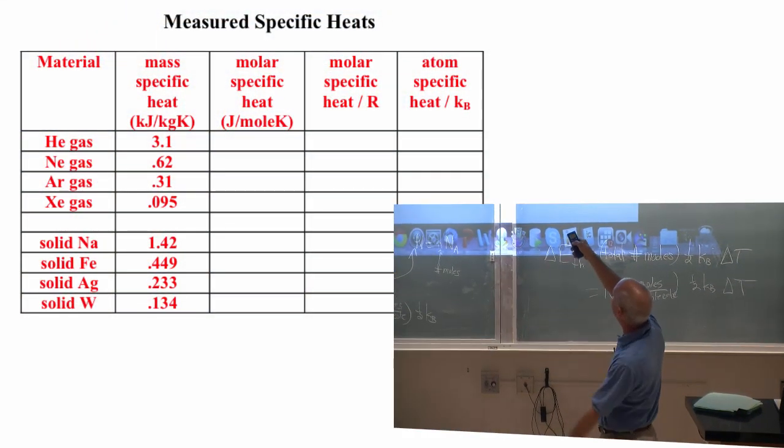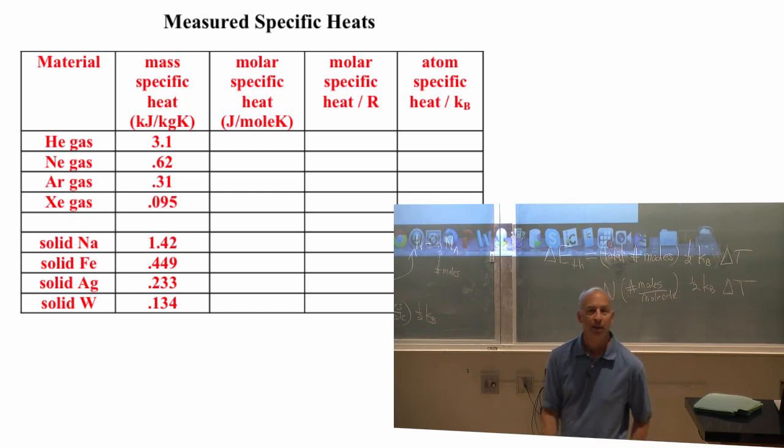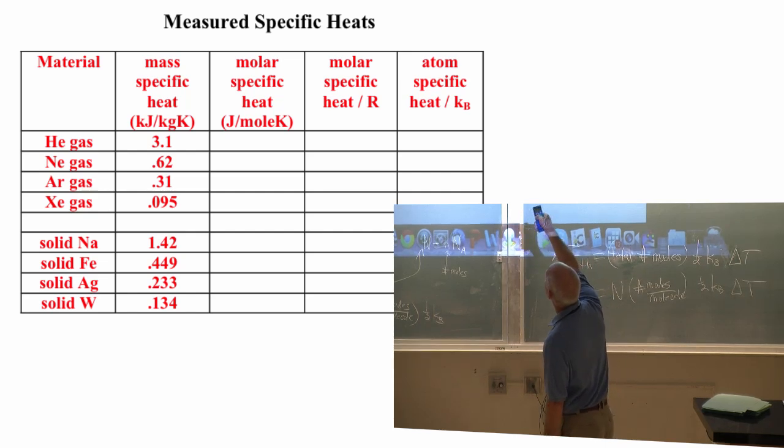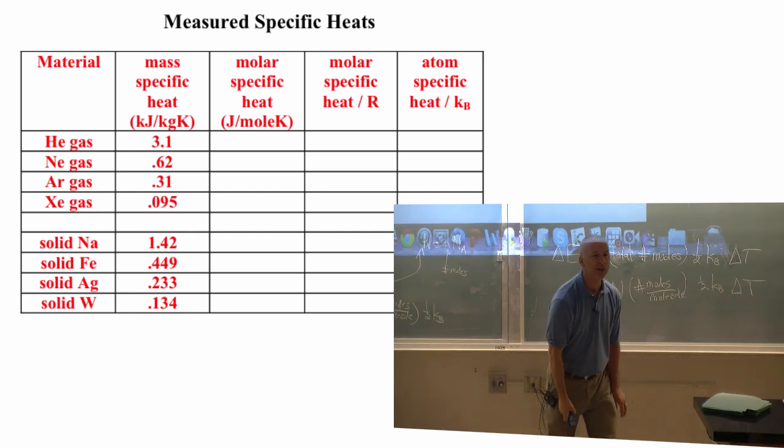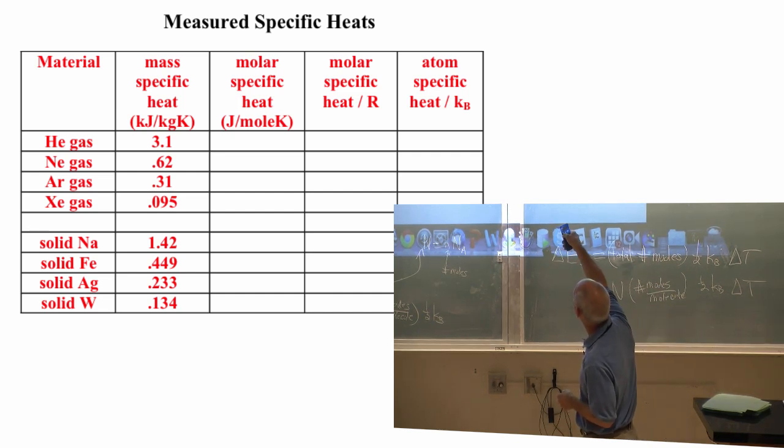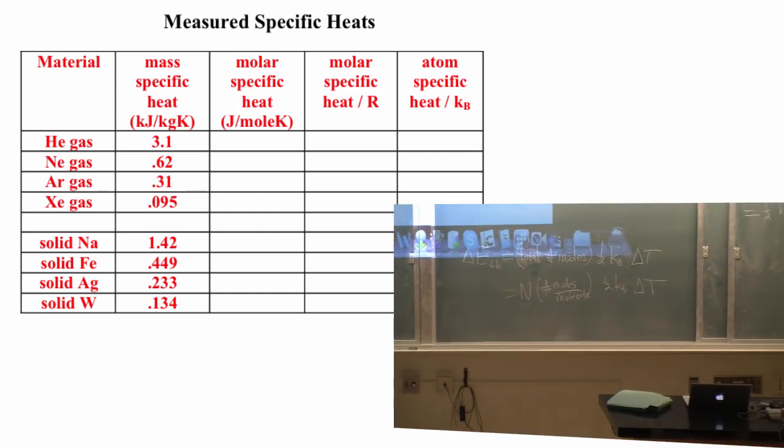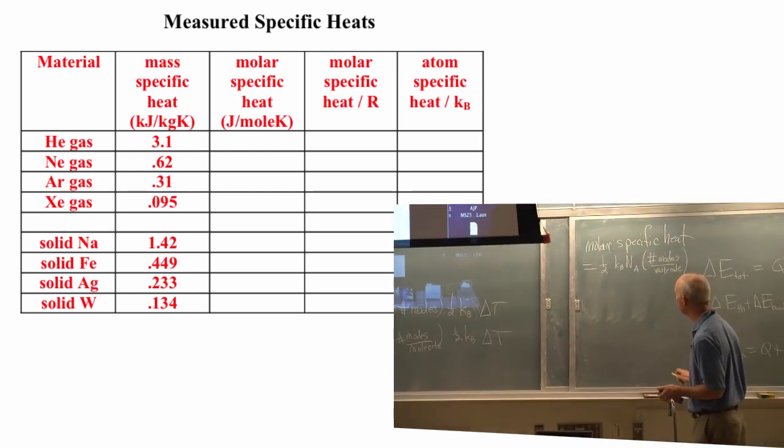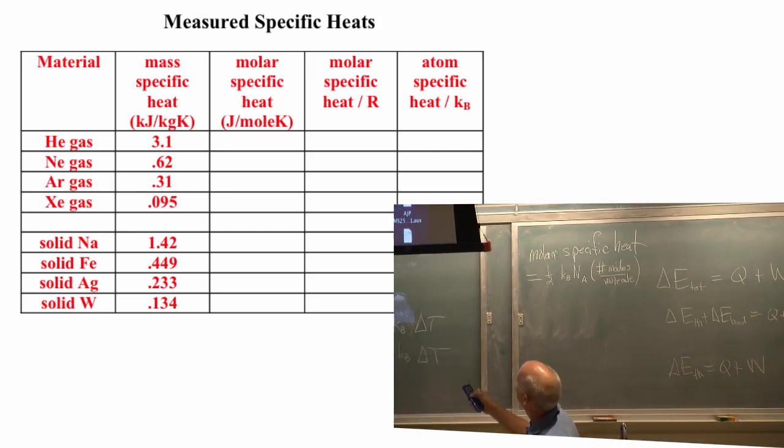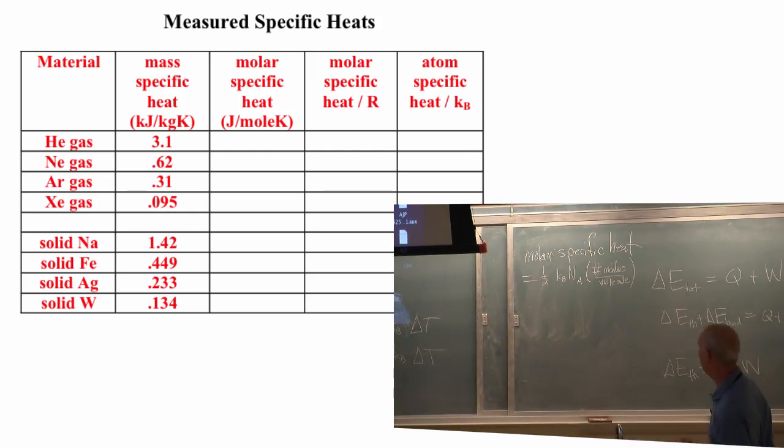So I just want you to think about this. Helium gas. Well, you can look up the mass specific heat. It's 3.1 kilojoules per kilogram Kelvin. So you can look that up. You can do a lot of calculations, but I think that you can tell me the molar specific heat of helium gas in joules per mole Kelvin. That would be the molar specific heat. That's the units of molar specific heat. Molar specific heat divided by R. That's what I'd like you.